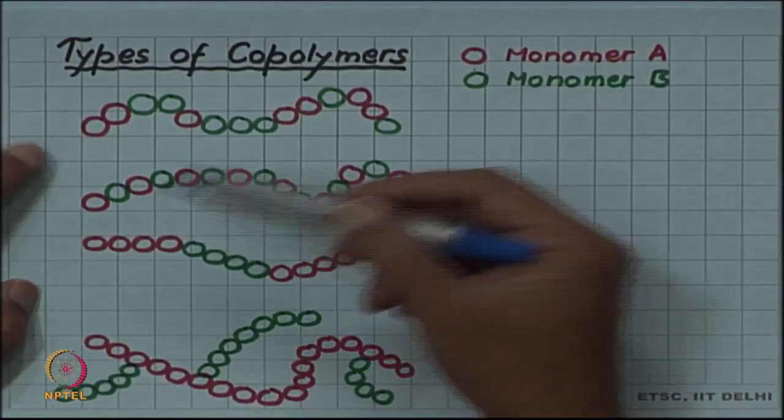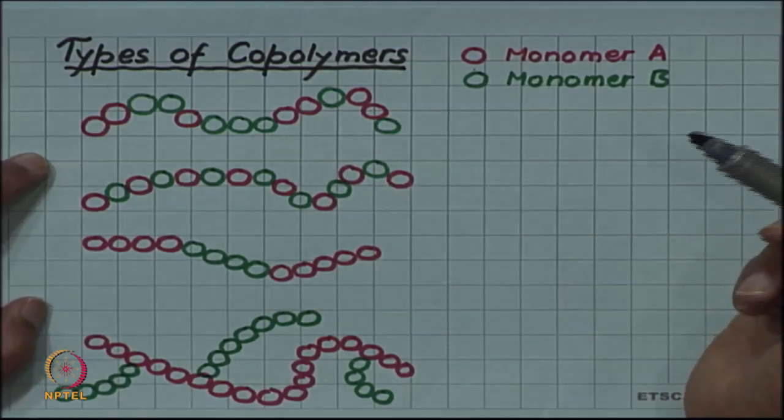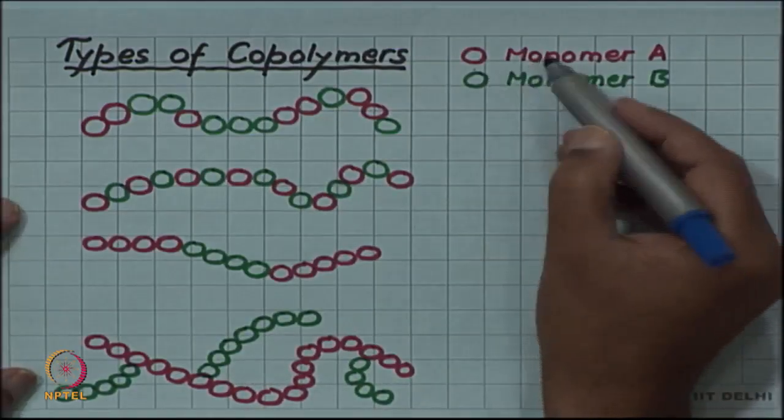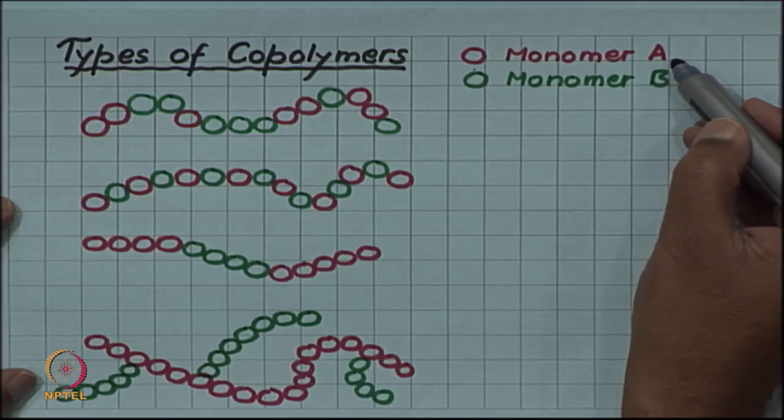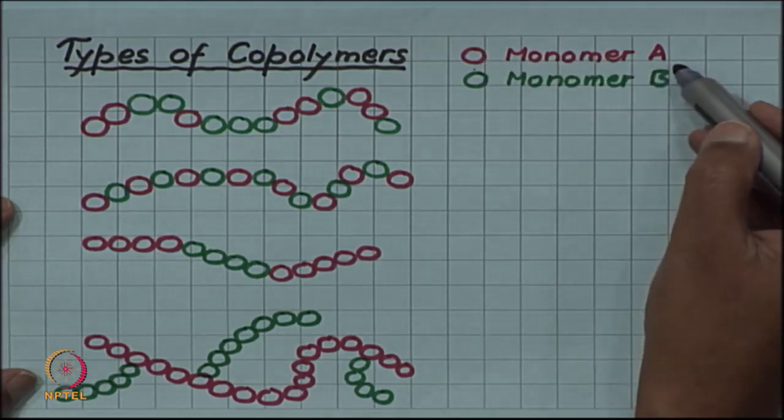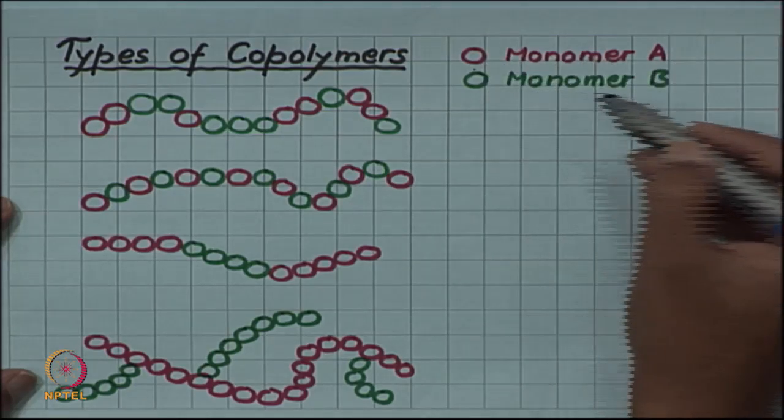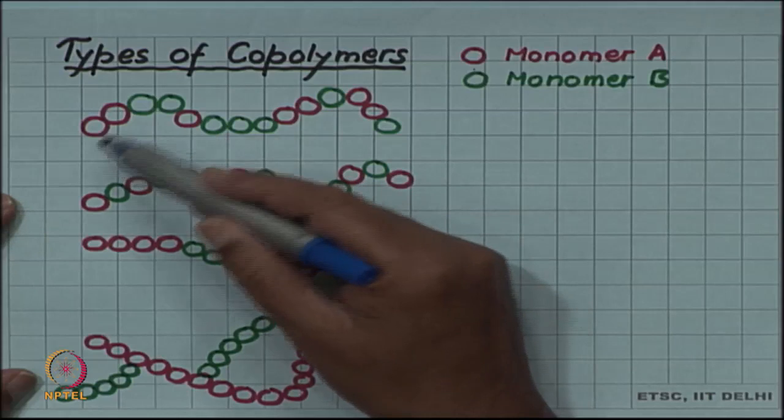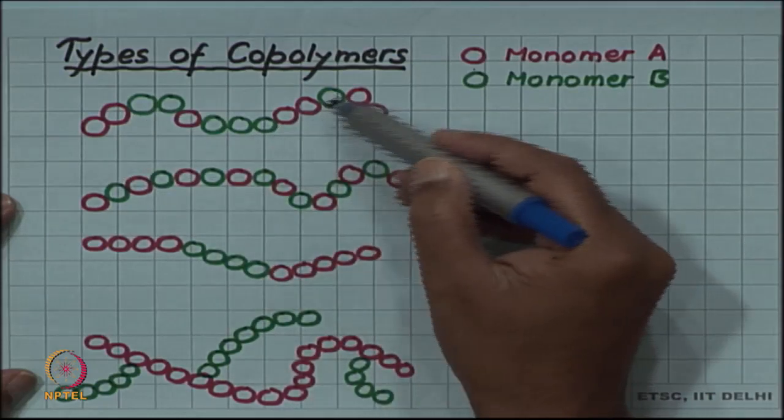Here I am drawing different kinds of copolymers by not writing down the full molecule, but just using circles representing monomers - the red circle representing the monomer of one type and the green circle representing the monomer of another type. So if you have these monomers coming in short units.